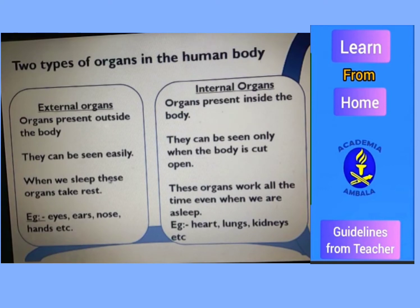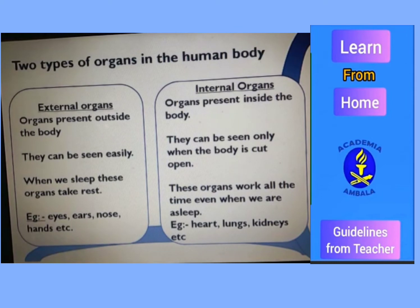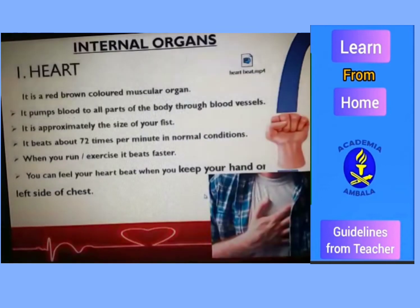External organs take rest when we sleep, whereas internal organs work all the time, even when we are sleeping. Examples of external organs are eyes, ears, nose, etc. Examples of internal organs are heart, lungs, kidneys, etc.